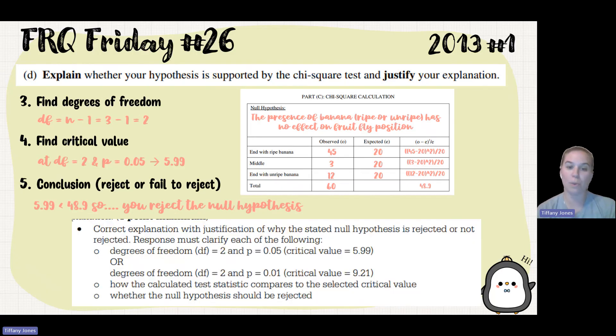And so for this point, you had to have everything. You had to give me a degree of freedom. You had to tell me your p-value. You had to tell me that calculated statistic and how it compared to the critical value, and you had to tell me whether the null hypothesis was rejected.